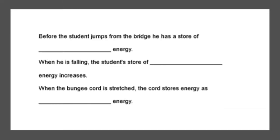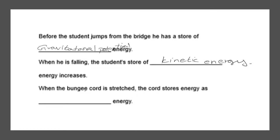Next question — our final question. Before the student jumps off the bridge, he has a store of... so if the student is on the bridge, he's not on the floor, which means he must have gravitational potential energy. And then when he's falling, the student's source of kinetic energy increases — so he's falling at a speed, so we know that this is going to be kinetic energy. And then when the bungee cord is stretched, the cord stores energy. This word 'stretched' means it's something associated with elastic potential energy. And that will give you three marks.